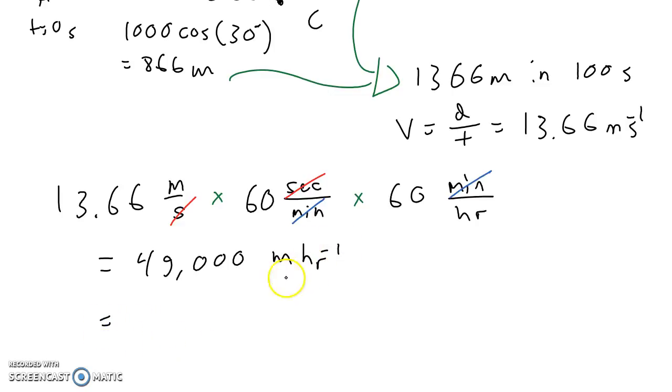49,000 meters per hour is 49 kilometers per hour, which is under the speed limit. So they should be fine.